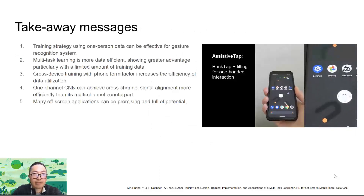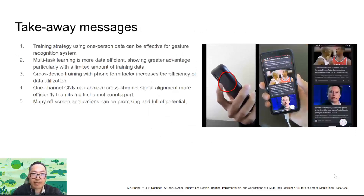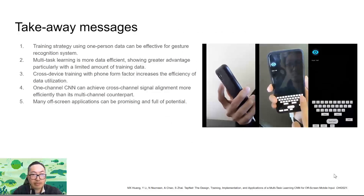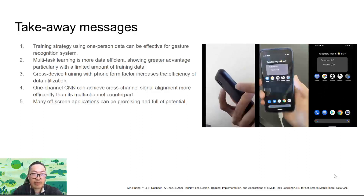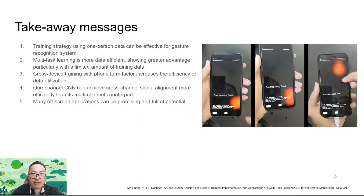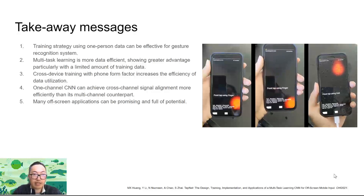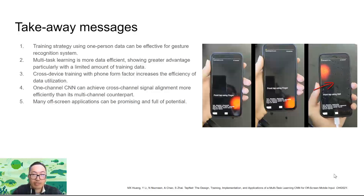There are a few takeaway messages from this paper. The training strategy using one-person data can be effective for gesture recognition systems. Multi-task learning can be more data-efficient, particularly when there is only a limited amount of training data. Cross-device training with different phone form factors increases the efficiency of data utilization. A single-channel CNN can achieve cross-channel signal alignment more efficiently than its multi-channel counterparts. Many off-screen applications can be promising and full of potential. Please refer to our paper for more details.